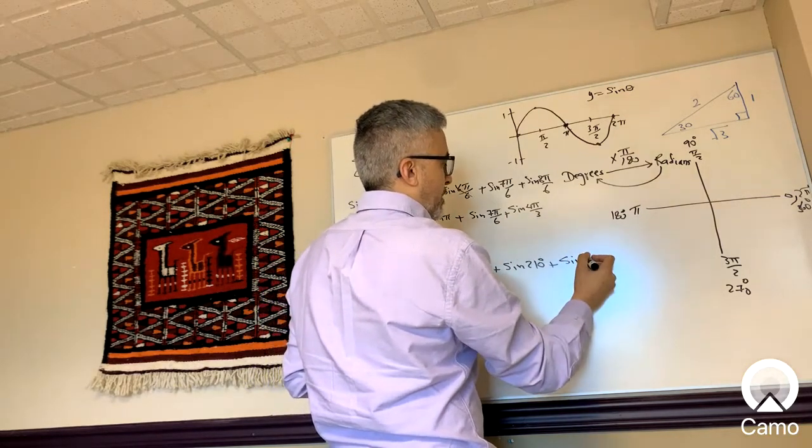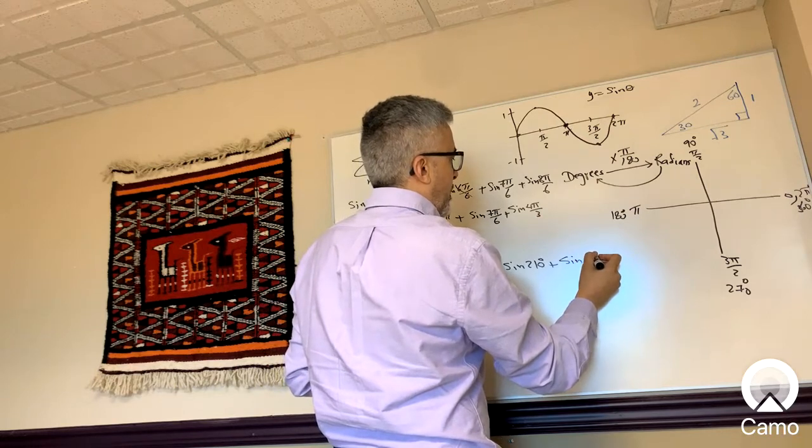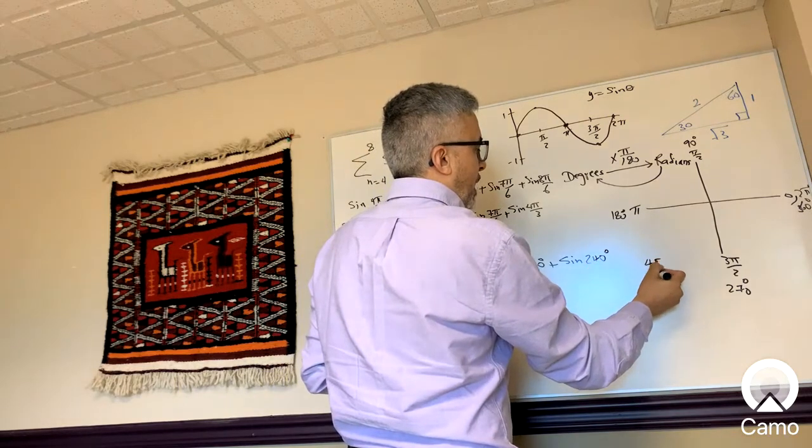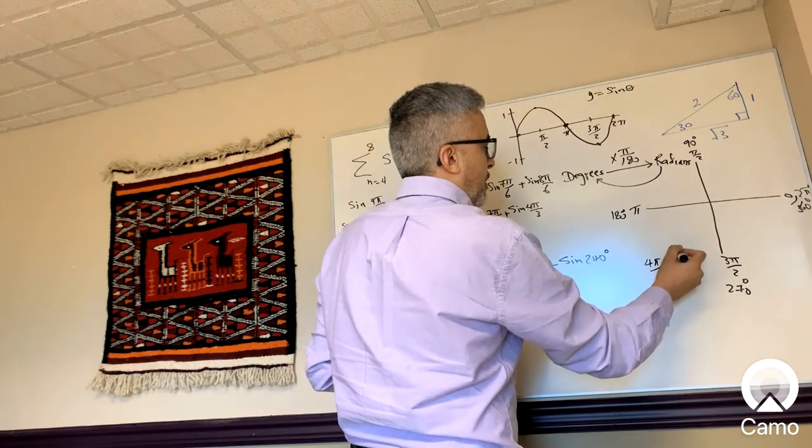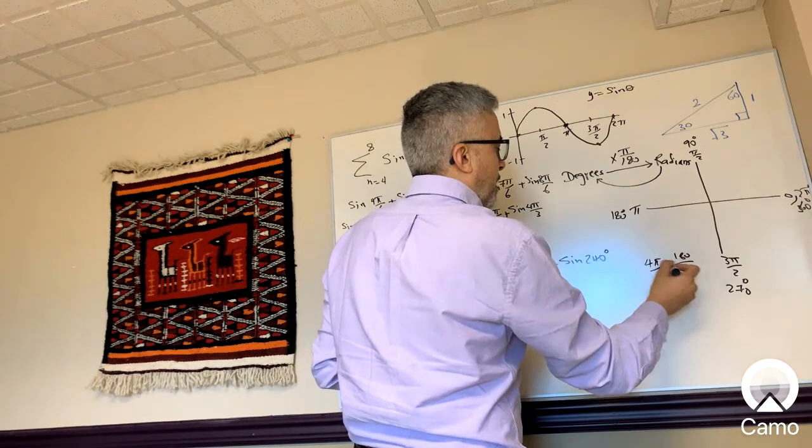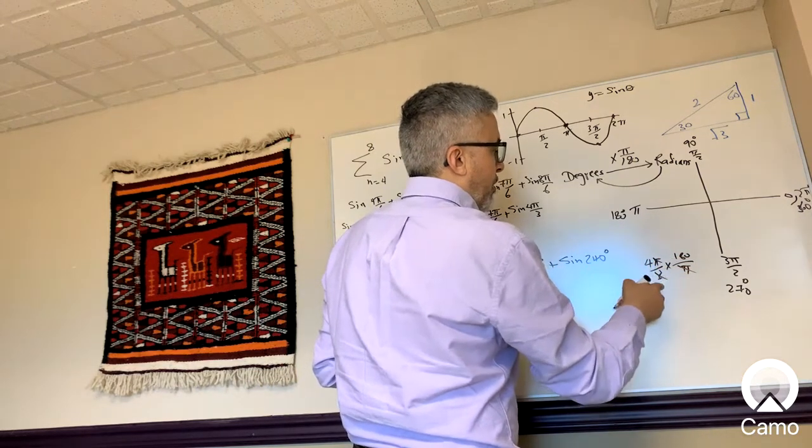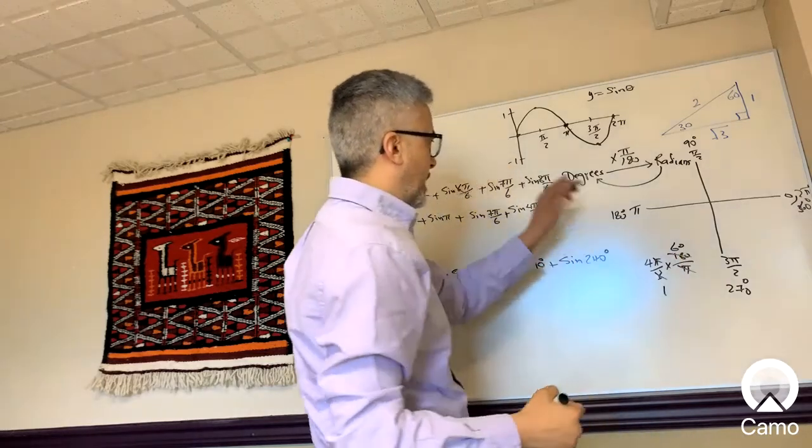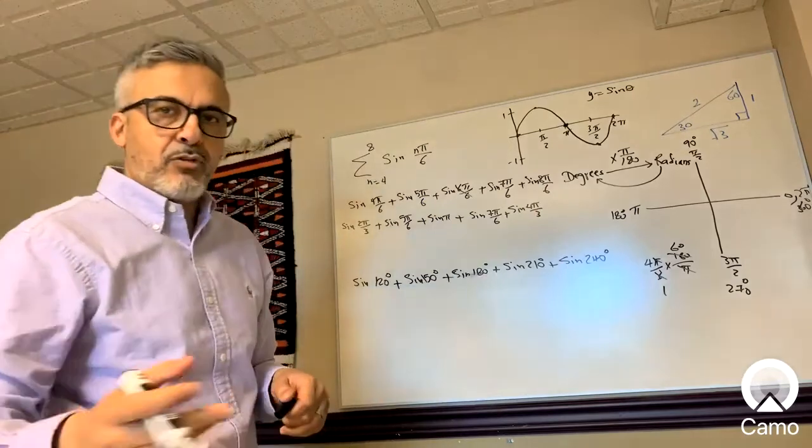That's 240 degrees. If you want to see an example: 4π/3 times 180 over π, the pis cancel, 3 goes into 180 sixty times, four times 60 is 240. That's an example on how to convert from radians to degrees.